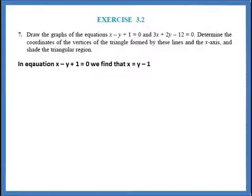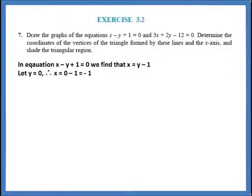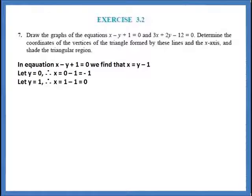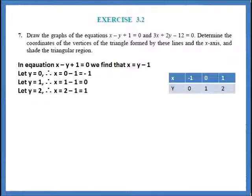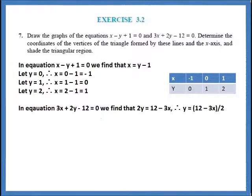In the equation x minus y plus 1 is equal to 0, we find that x is equal to y minus 1. Let y equal 0, therefore x equals 0 minus 1, which is minus 1. Let y equal 1, therefore x equals 1 minus 1, that is 0. Let y equal 2, therefore x equals 2 minus 1, which is 1. Arranging these three sets of values in tabular form: x equals minus 1 for y equals 0; x equals 0 for y equals 1; and x equals 1 for y equals 2.